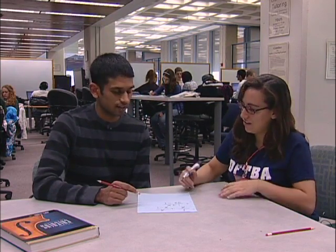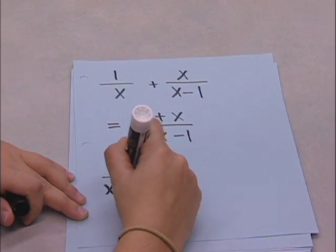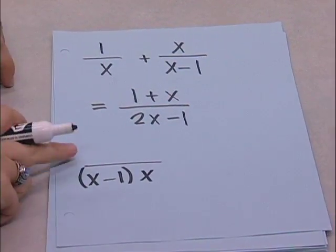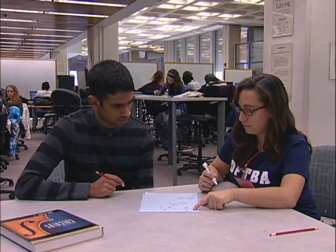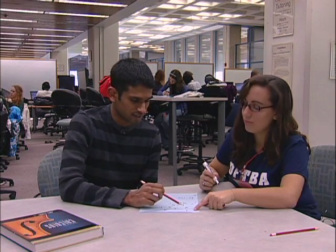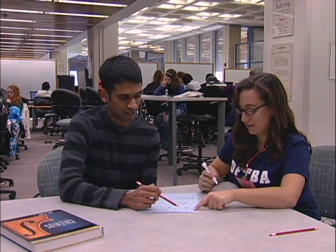Um, x minus 1. Oh wait — it's x minus 1 times x. Exactly. So when you have x minus 1 times x in your denominator, what's going to be your new numerator for this first one? Oh, so I have to multiply both sides by x minus 1. So it's going to be x minus 1.